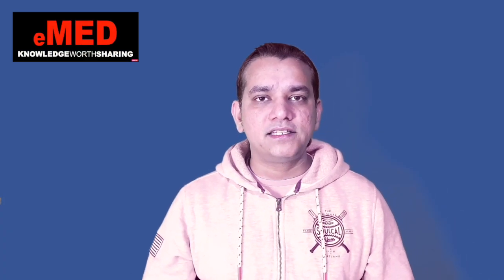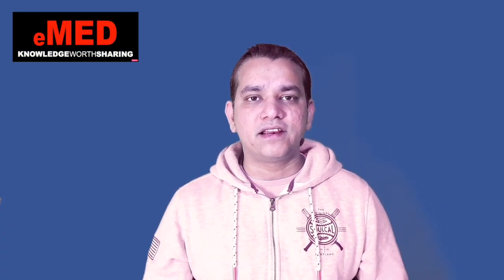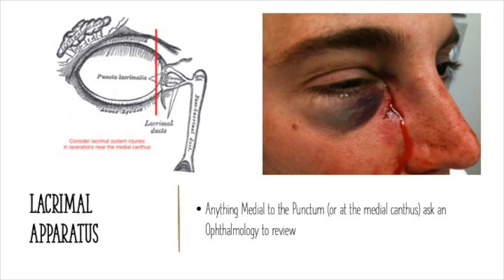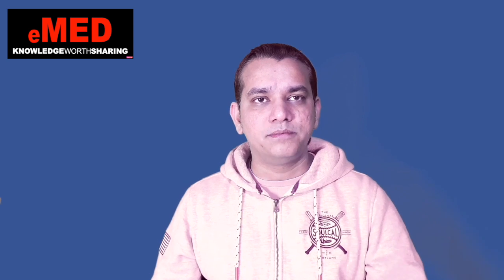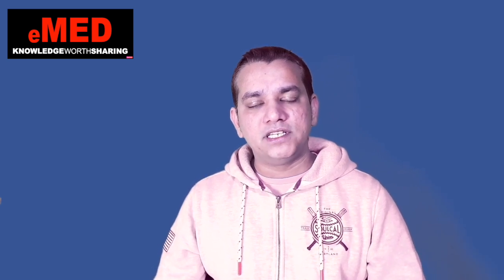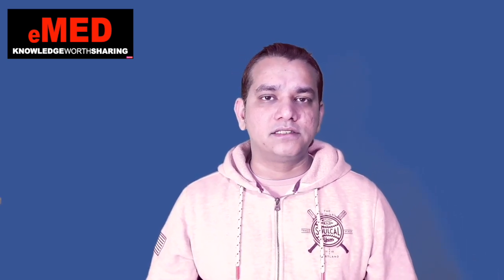Before moving on, let's discuss the nasolacrimal apparatus. If you look closely at the medial canthus of the eye, you will see two puncta — one on each lid. These puncta drain via the lacrimal canaliculi into the lacrimal sac. The lacrimal sac opens through the nasolacrimal duct below the inferior turbinate. In general, any laceration on the medial canthus needs to be assessed and managed by ophthalmic surgeons.